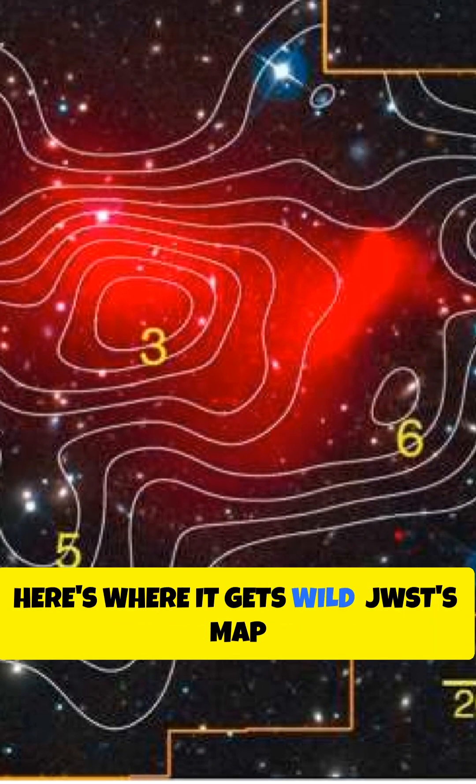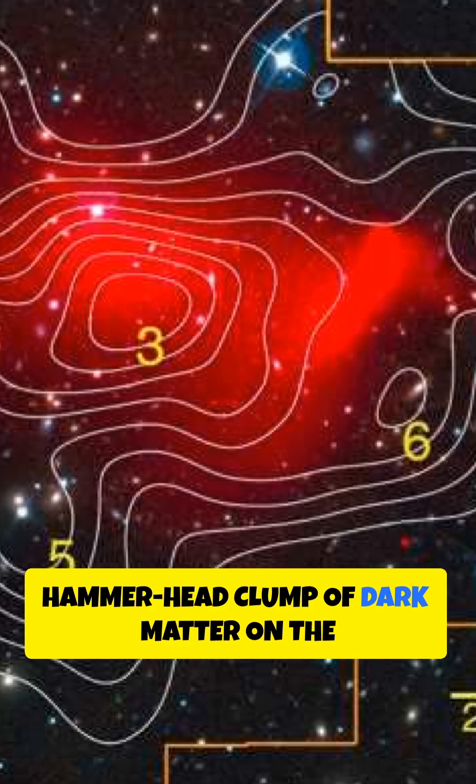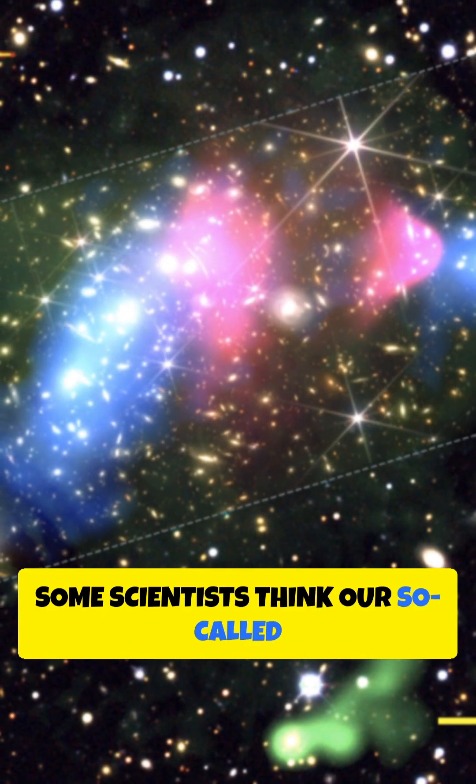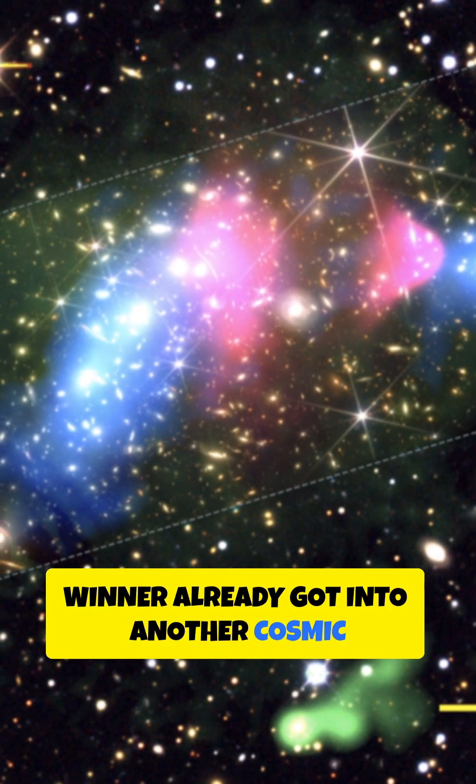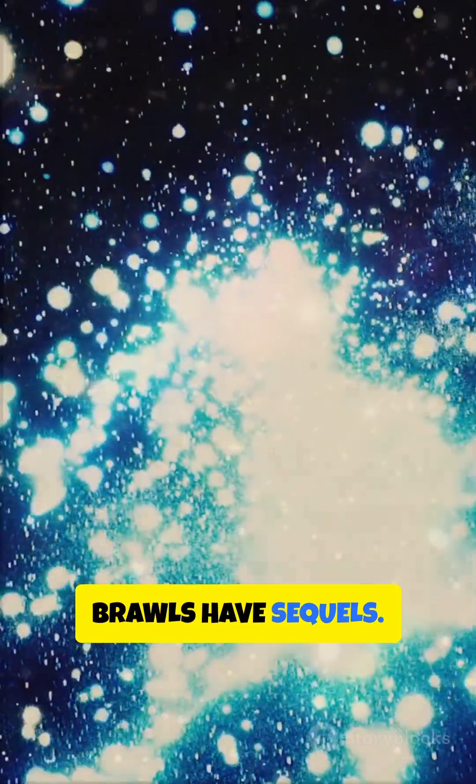Here's where it gets wild. JWST's map reveals a weird hammerhead clump of dark matter on the left side. Some scientists think our so-called winner already got into another cosmic bar fight before this one. Basically, in space, brawls have sequels.